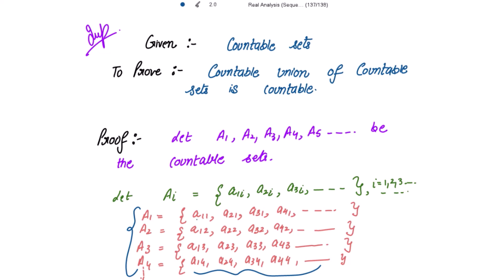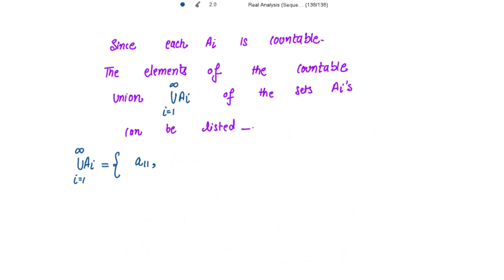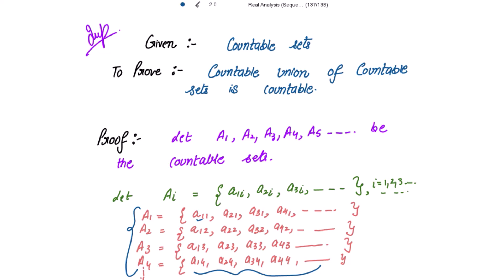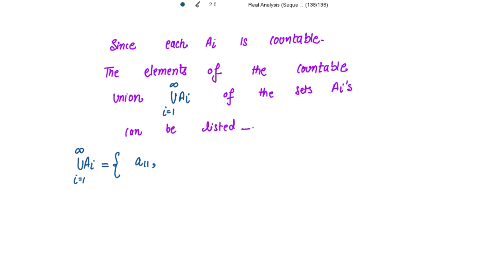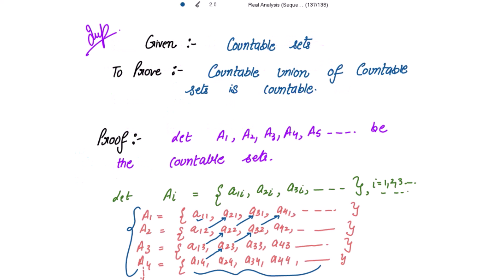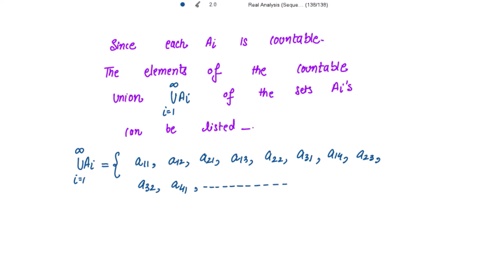How do we list the elements of the union of all these countable sets in a sequence? Let me write the first element as a11, and the order of the other elements follows a diagonal pattern: from a11 to a12, then a21, then a13, a22, a31, then a14, a23, a32, a41, and we continue like this.